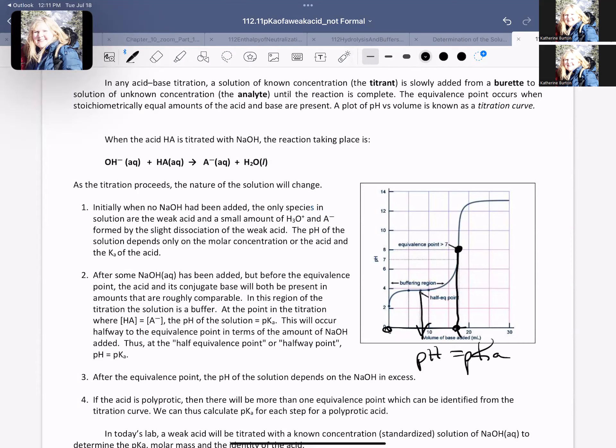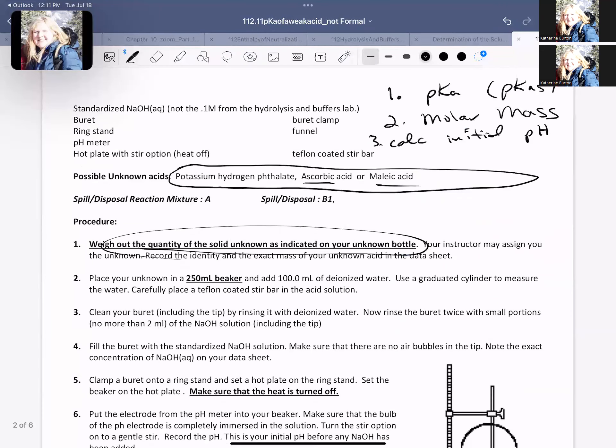So at this point, you have a pKa of your weak acid, reading it off your graph, you have your molar mass of your acid, and you are going to use those two things, both the pKa and the molar mass, to identify which acid you have.